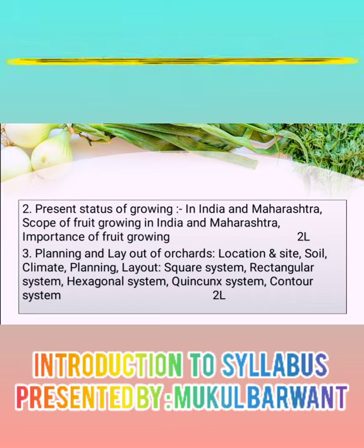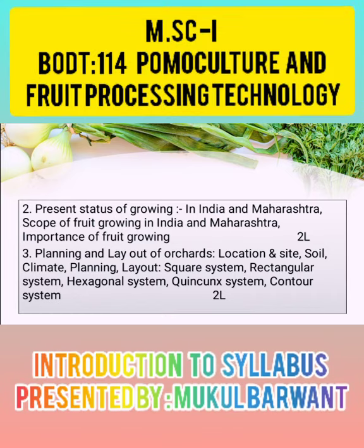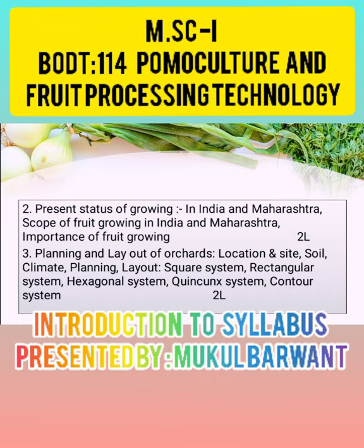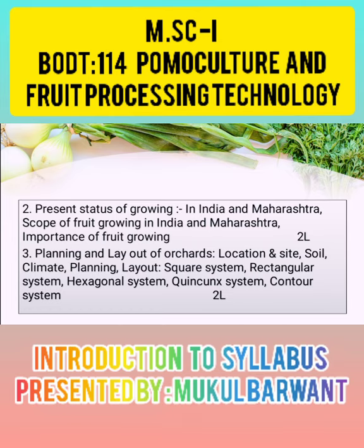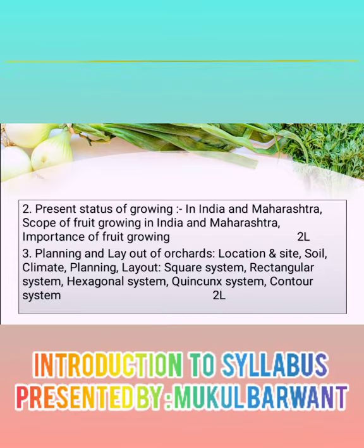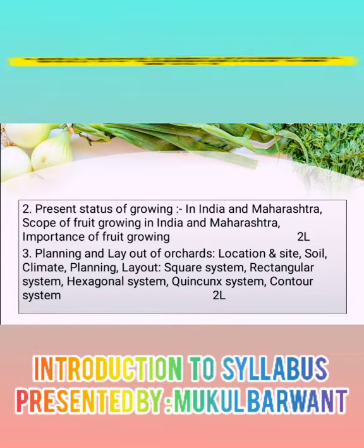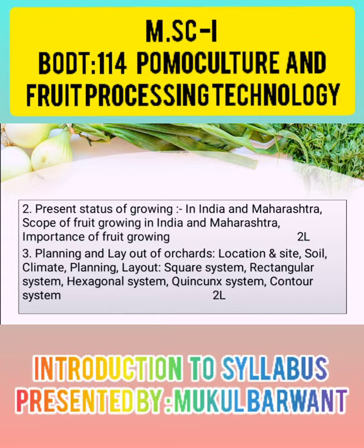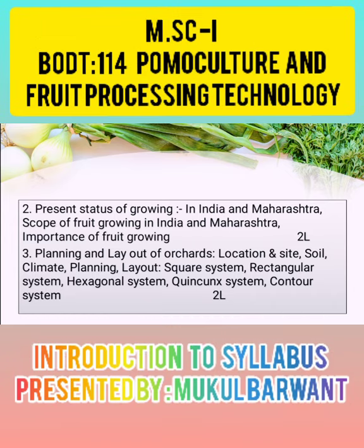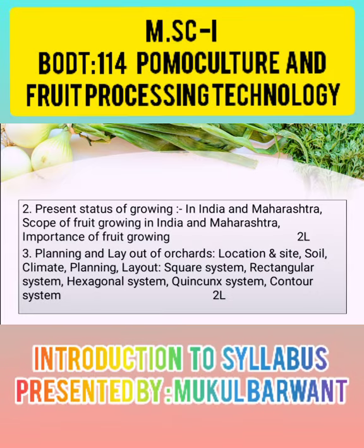Chapter number three is planning and layout of an orchard. An orchard is nothing but like any garden, poly house or nursery — it is a structure in which fruit crops are cultivated. In the view of orchard, we are going to see the location, site, soil, and climate. We cannot plant any fruit crops anywhere; we require some conditions. For example, location, site, soil, and climate are needed — we should require those parameters.